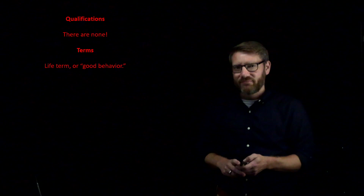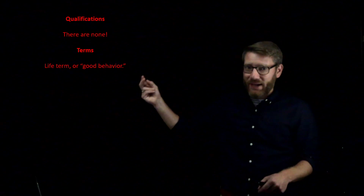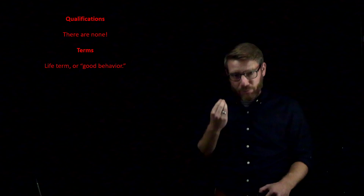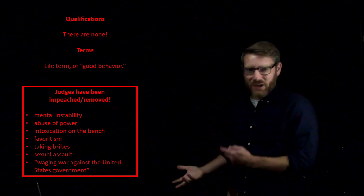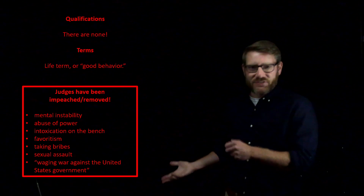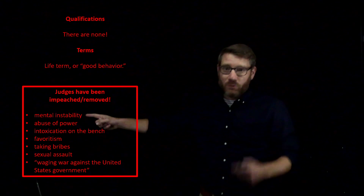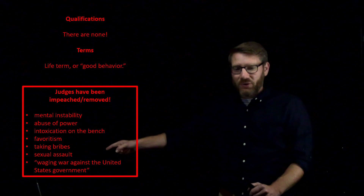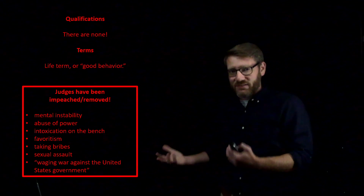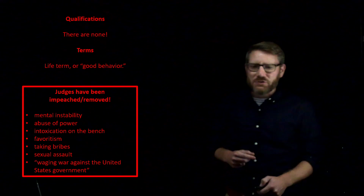If you've had bad behavior as a judge, you can be removed from office via impeachment and removal. Just like Congress can remove the president, Congress can also remove a federal judge. This has happened about a dozen times in American history — for reasons including mental instability, abuse of power, taking bribes, favoritism, being drunk on the job, and sexual assault.